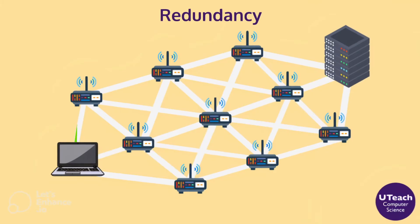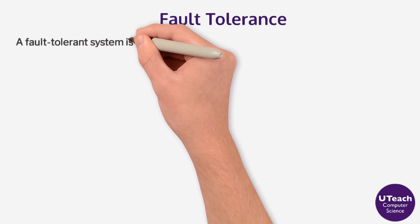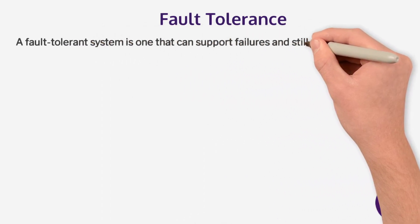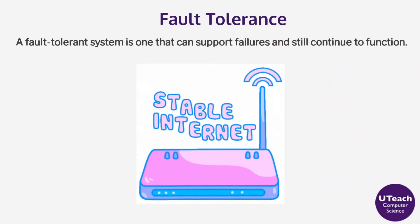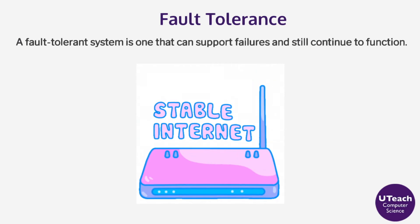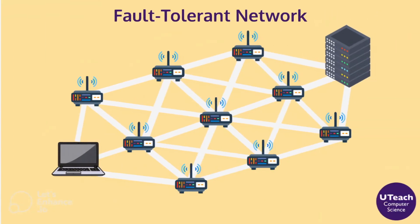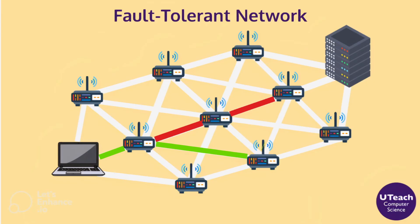Redundancy within a system often requires additional resources, but can provide the benefit of Fault Tolerance. A Fault Tolerant system is one that can support failures and still continue to function. This is important because elements of complex systems fail at unexpected times, often in groups, and Fault Tolerance allows users to continue to use the network.